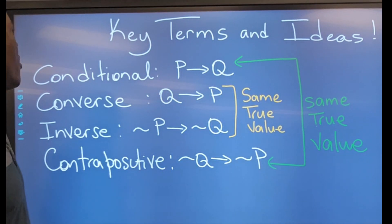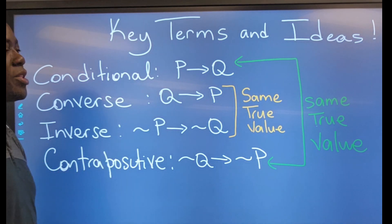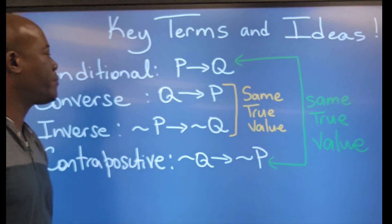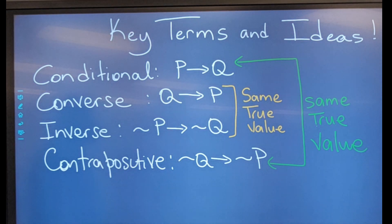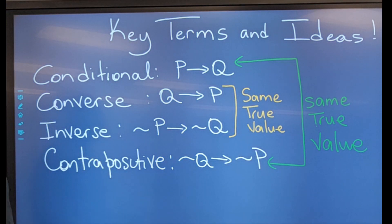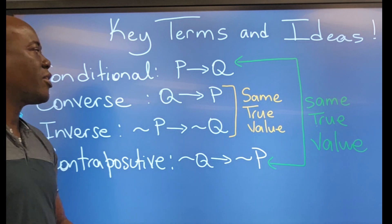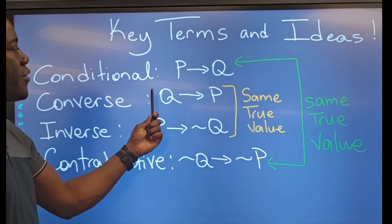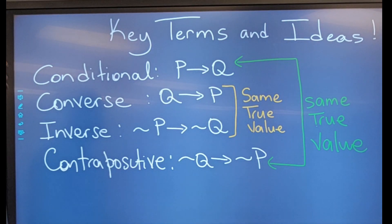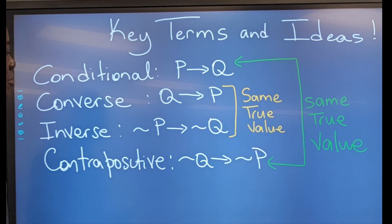We're going to come across our conditional statement, which is the original statement 'if p then q.' We will come across what is called our converse, which is to switch our hypothesis and the conclusion, so it reads 'if q then p.' We'll also come across our inverse statement.